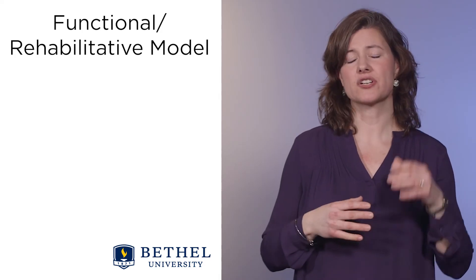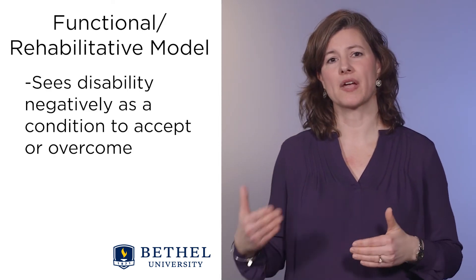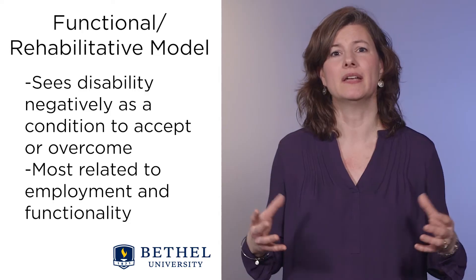Although the functional rehabilitative model sees disability negatively as a condition to accept or overcome, it's most related to employment and functionality — it's considered more of an economic model. The idea of being an overcomer comes along with this model, but it can lead to the negative stereotype that you either have to be a 'super crip' or you're just not accepted for who you are. The model focuses on functional limitations and the use of accommodations and assistive technology to make the most of functional activities such as employment and completing household tasks.